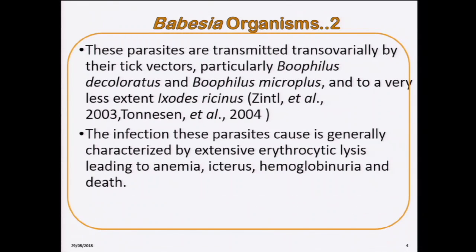These parasites are transmitted transovarially by their tick vector, particularly Boophilus decoloratus and Boophilus microplus, and to a very lesser extent, Ixodes ricinus. The infection these parasites cause is generally characterized by extensive erythrocytic lysis, leading to anemia, icterus, hemoglobinuria, and eventually death.